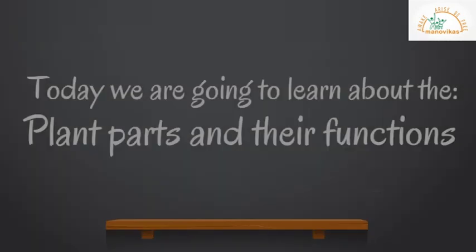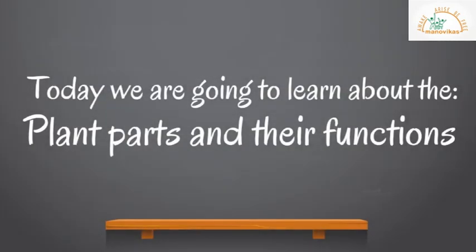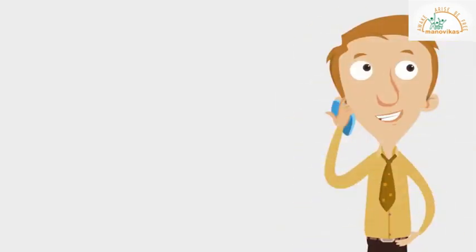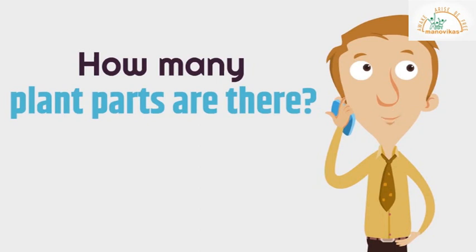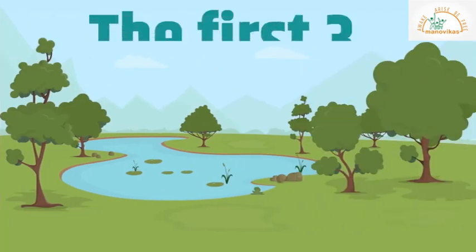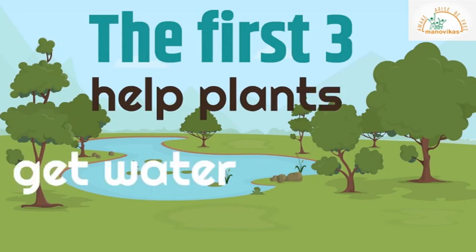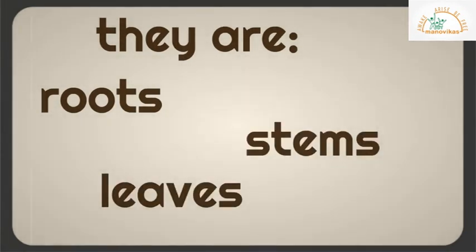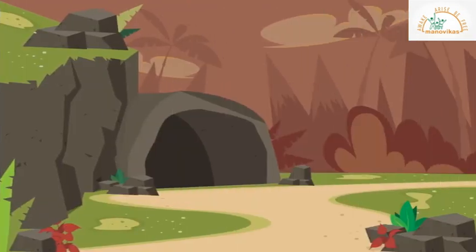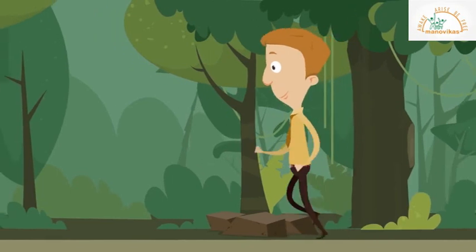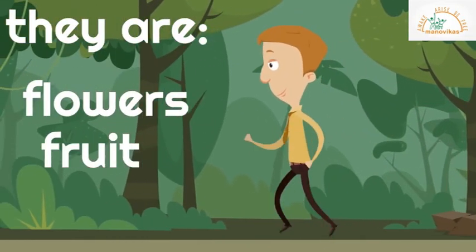Today we are going to learn about plant parts and their functions. Plants have six parts. The first three help plants get water, make food, and grow — they are roots, stems, and leaves. The second three help plants grow new plants — they are flowers, fruit, and seeds.